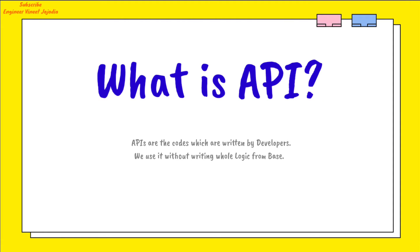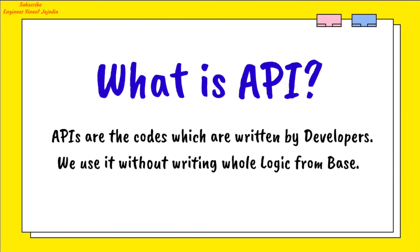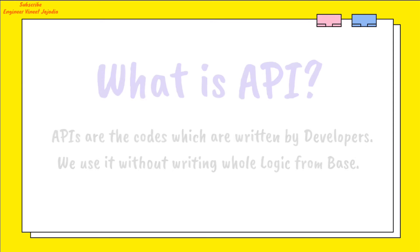What is basically an API? APIs are the codes which are already written by the developers — we just have to use them. We don't have to create the whole logic from the base; we just use that particular method in our code. We don't have to write the full logic from scratch — that's what API means.